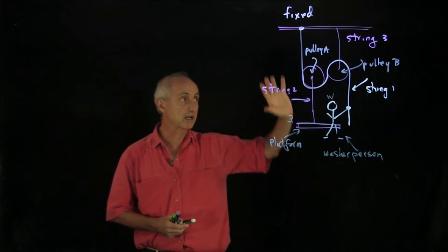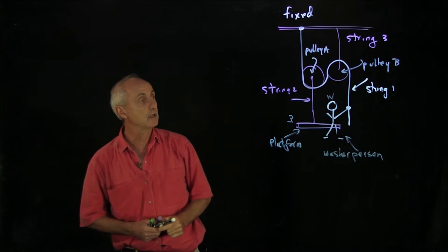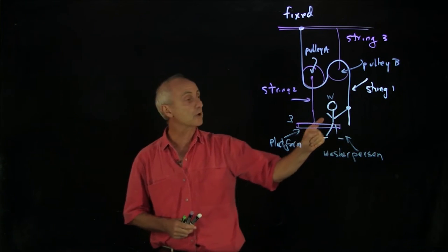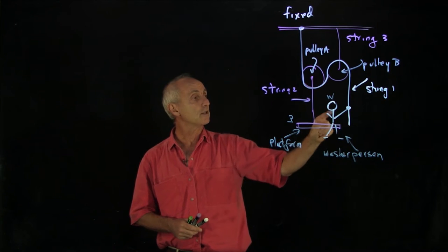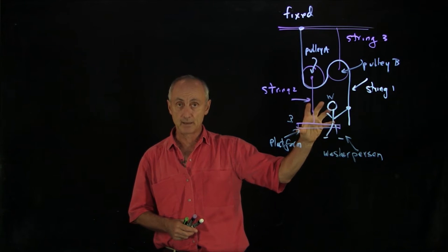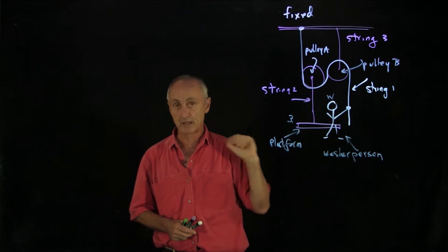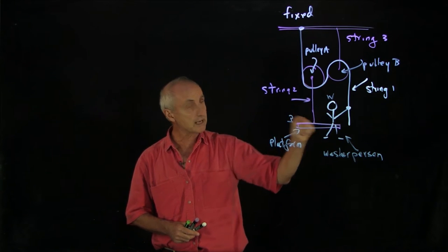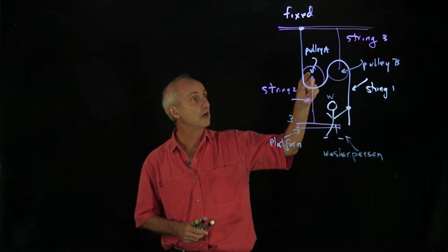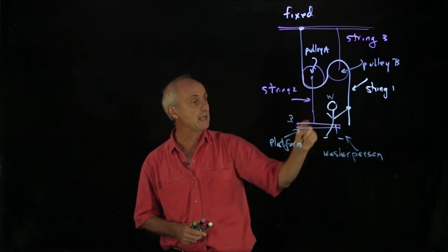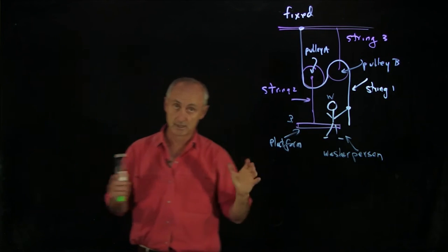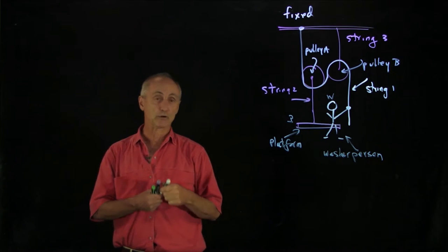What makes this problem complicated is all these different elements. We'll approach it in stages: first look at the person separately, then the platform, then combine them into a system of person and platform. Since the rope is connected to the platform, we'll then consider a system consisting of pulley A, the person, the platform, and the washer. Now let's draw the free body diagrams.